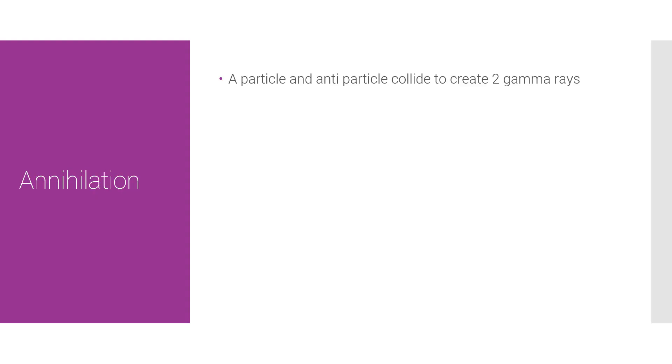But, the key thing to remember here is that two photons are created as a result, okay? This is to conserve the energy momentum. And the formula is pretty much the same, except it's just E. Not two times E, it's just E.